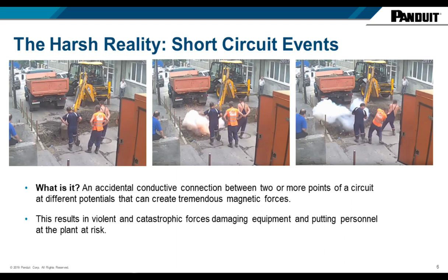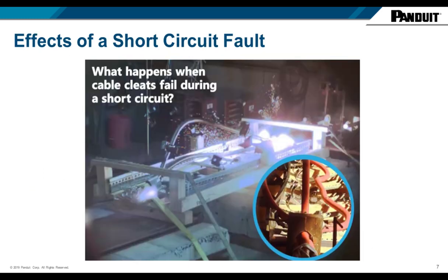A short-circuit event is an accidental conductive connection between two or more points of a circuit. When this happens, it creates a tremendous electromagnetic force — the result is often violent and catastrophic. It can damage equipment and personnel and put the infrastructure and facility at risk. In the photos depicted, you can see where a contractor accidentally broke through the street and came in contact with underground cabling, resulting in a short-circuit event.